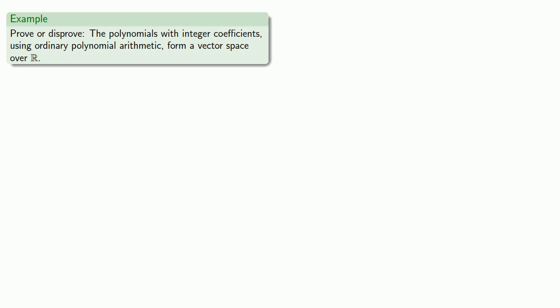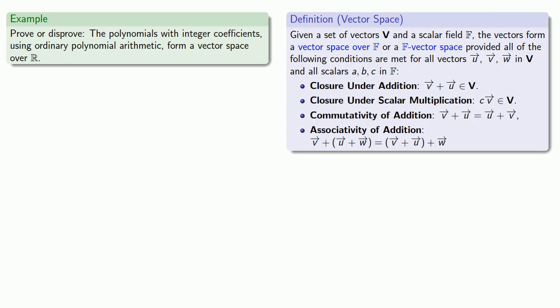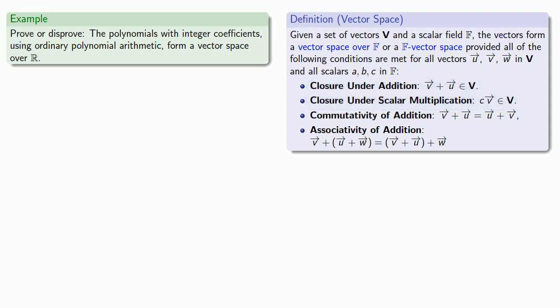The first two requirements are closure requirements. The key property of closure is that the sum, or scalar multiple, is going to be something in our set. If I add two polynomials with integer coefficients, do I get a polynomial with integer coefficients? Yes — so we are closed under addition.